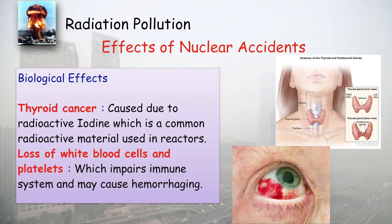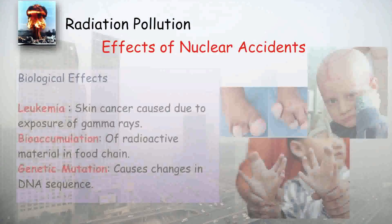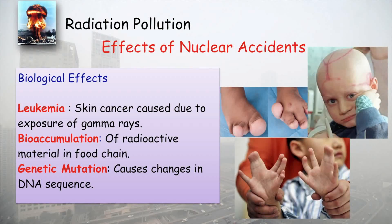Nuclear radiation exposure can also cause leukemia, which is a blood cancer caused by exposure to gamma rays. There is also bioaccumulation — radioactive material accumulates in the food chain. Finally, there are chances of genetic mutations causing changes in DNA sequences, such as babies born with fused fingers.